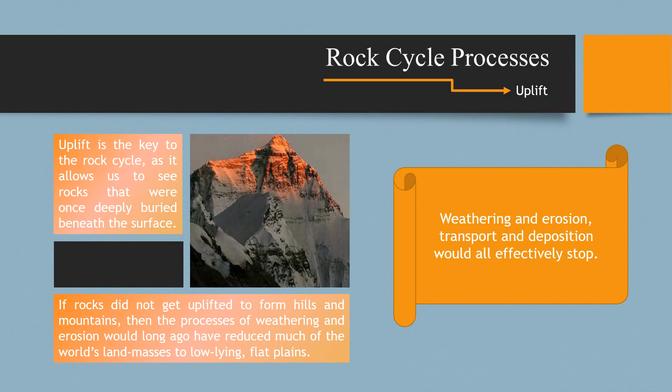Uplift. Uplift is the key to the rock cycle as it allows us to see rocks that were once deeply buried beneath the surface. If rocks did not get uplifted to form hills and mountains, then the processes of weathering and erosion would long ago have reduced much of the world's land masses to low-lying flat plains. Weathering, erosion, transport, and deposition would all effectively stop. Mount Everest is made of limestone that must have originally formed on an ancient sea floor, because it contains fossils of marine creatures.